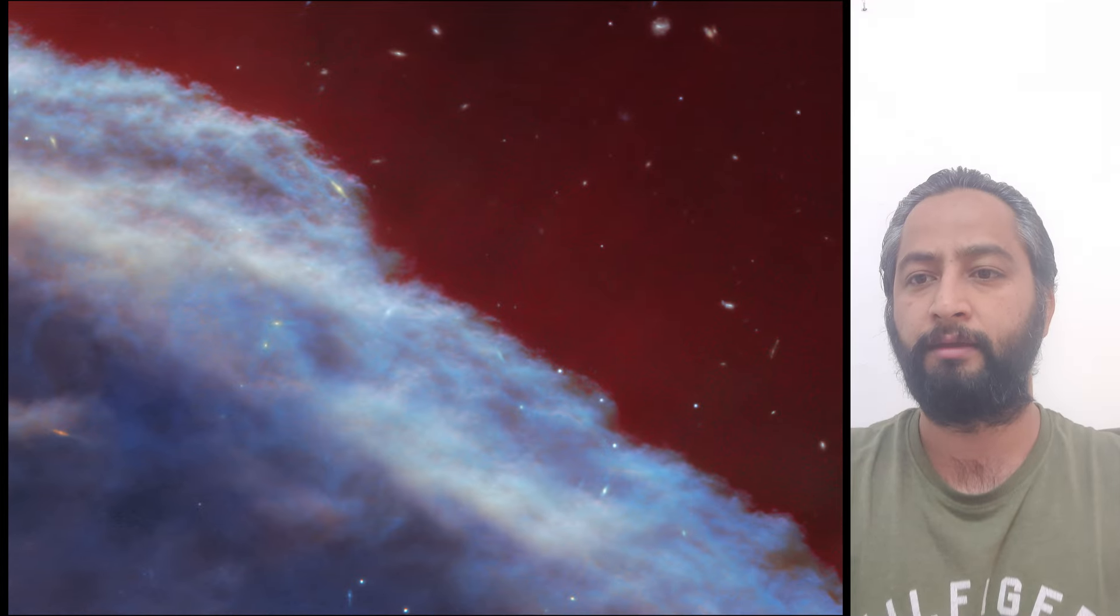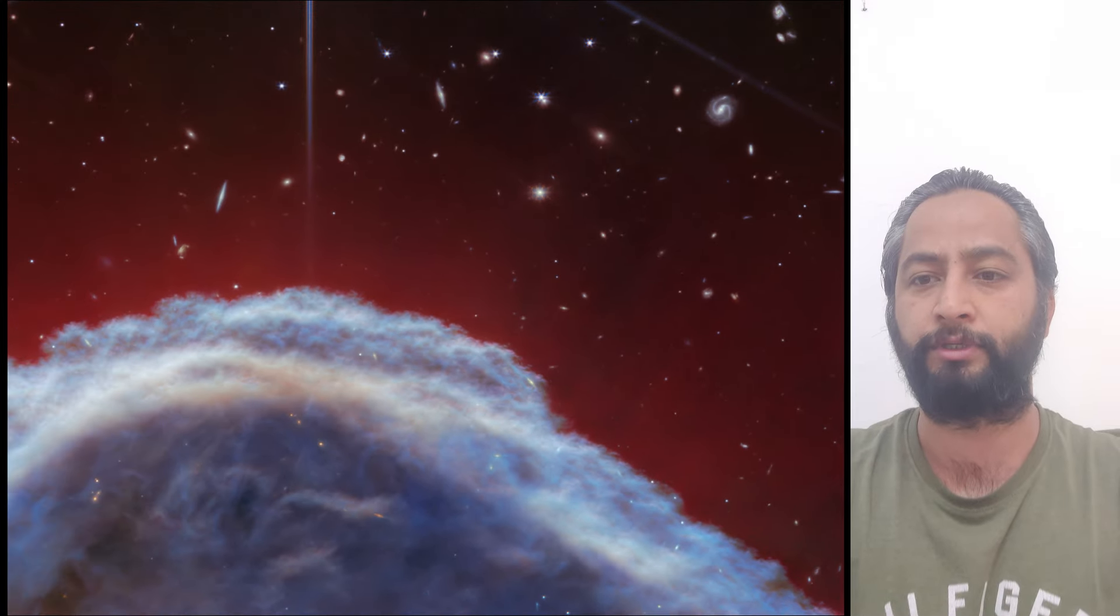The nebula is formed from a collapsing interstellar cloud of material and glows because it is illuminated by nearby hot stars. The gas clouds surrounding the Horsehead Nebula have already dissipated, but the jutting pillar is made up of thick clumps of material that is harder to erode.